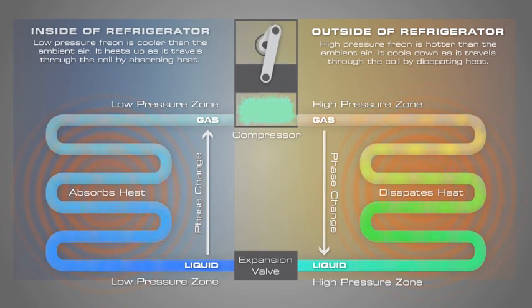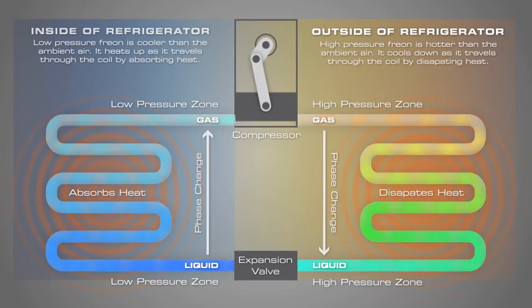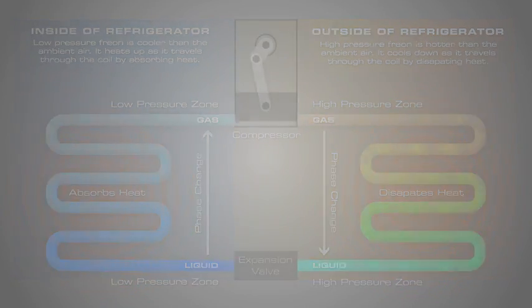When all of the freon changes to gas, the cycle can start over again. Refrigerators are essentially heat engines working in reverse. Whereas a heat engine converts heat to work, refrigerators convert work to heat, cycling the compression and expansion of the freon gas, combined with the phase transitions between the gaseous and liquid phases of the freon.